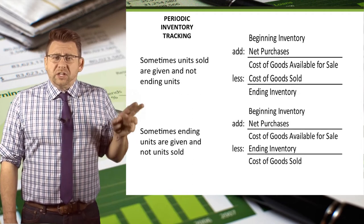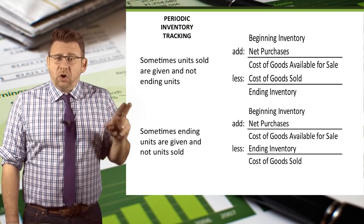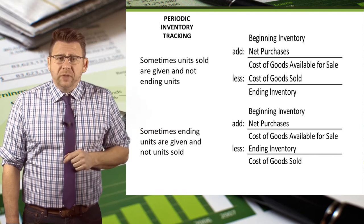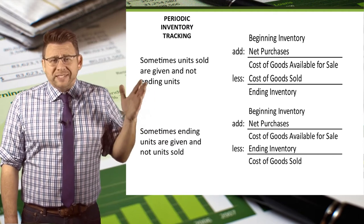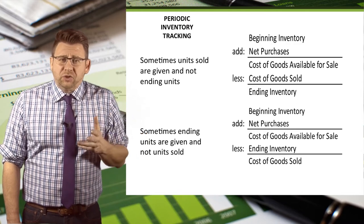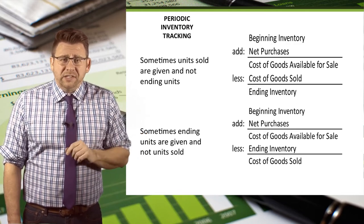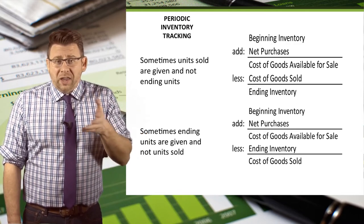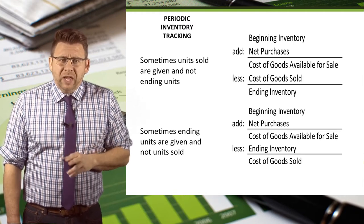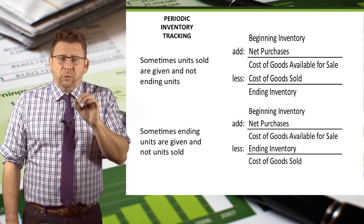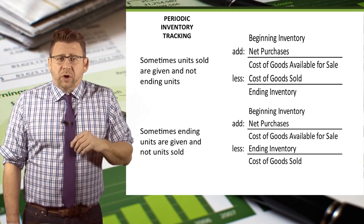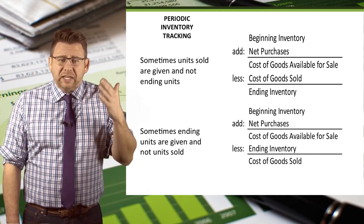We could also subtract the units sold to arrive at ending inventory. This is important to note because sometimes the units sold are given and not the ending units, while other times it's the ending units that are given and not the units sold. However, in real life, we know the ending units of inventory because we physically counted them.